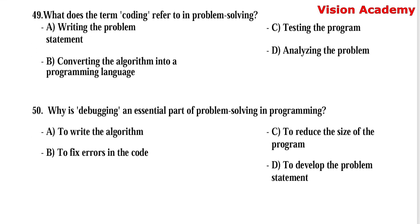Question number 49: What does the term coding refer to in problem solving? Option A, writing the problem statement. Option B, converting the algorithm into a programming language. Option C, testing the program. Option D, analyzing the problem. Here, option B, converting the algorithm into a programming language, is the right answer.